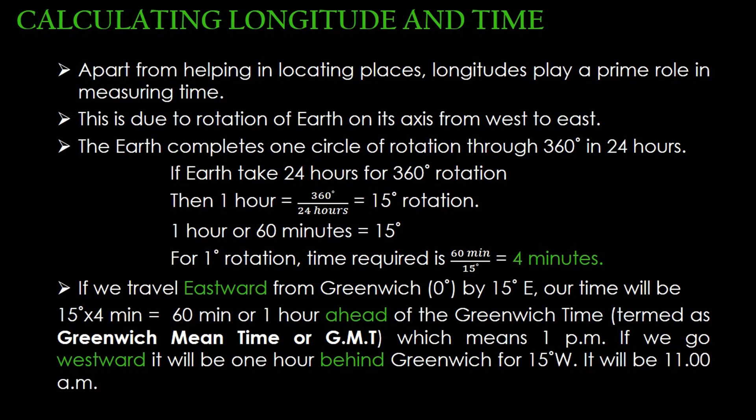We already know that the earth takes 24 hours to complete one circle of rotation, i.e. 360 degrees. So it takes 24 hours for 360 degree rotation. Now we are going to calculate it for 1 hour: 1 hour is equal to 360 degrees divided by 24 hours, which is equal to 15 degrees rotation.